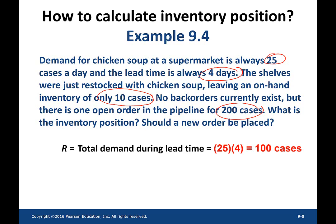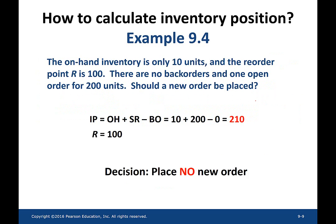For the inventory position, you add on-hand inventory of 10 cases and scheduled receipts of 200 cases, which equals 210 cases. In this example, there are no back orders that need to be satisfied. Since the inventory position of 210 is higher than the reorder point of 100, the decision is not to place an order.